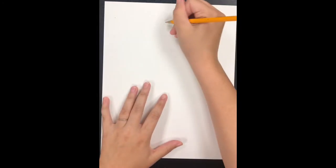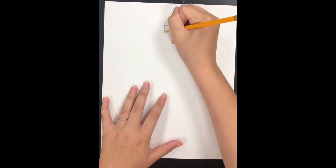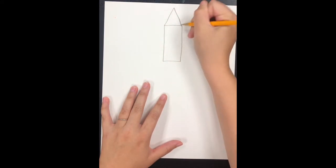First we're going to draw our rocket. We're going to start with a triangle at the top middle of your paper, then we're going to make a rectangle.